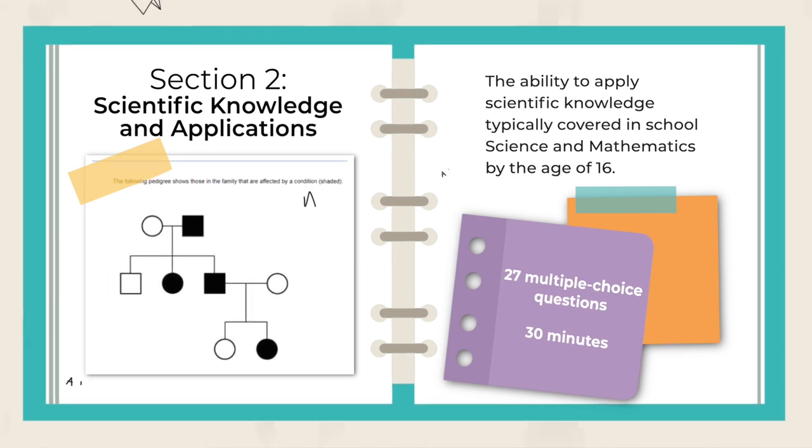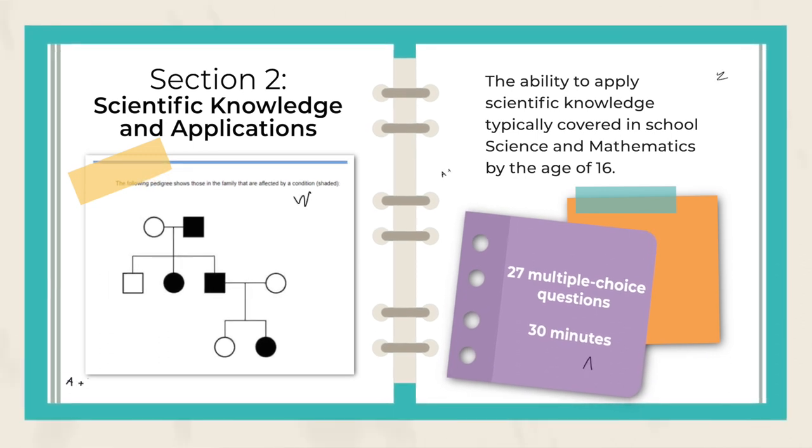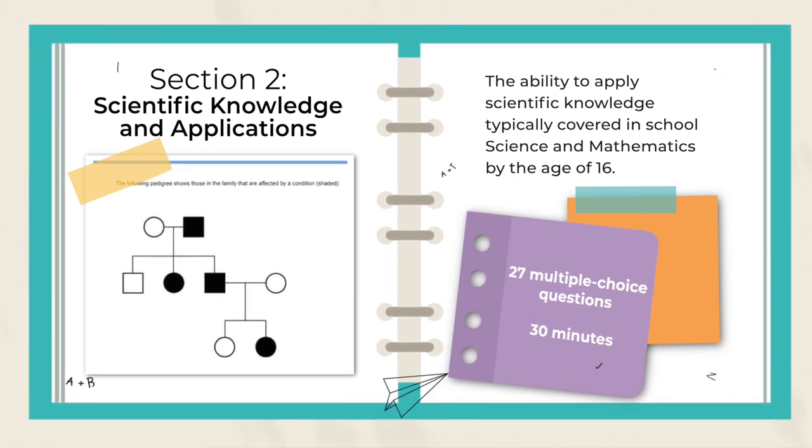If you're in the UK, everything done at GCSE level will be covered. If you've done IGCSE, that covers the same material. Most schools worldwide will have covered the same sort of material that appears in this section. Section two is 27 multiple choice questions and you only have 30 minutes.